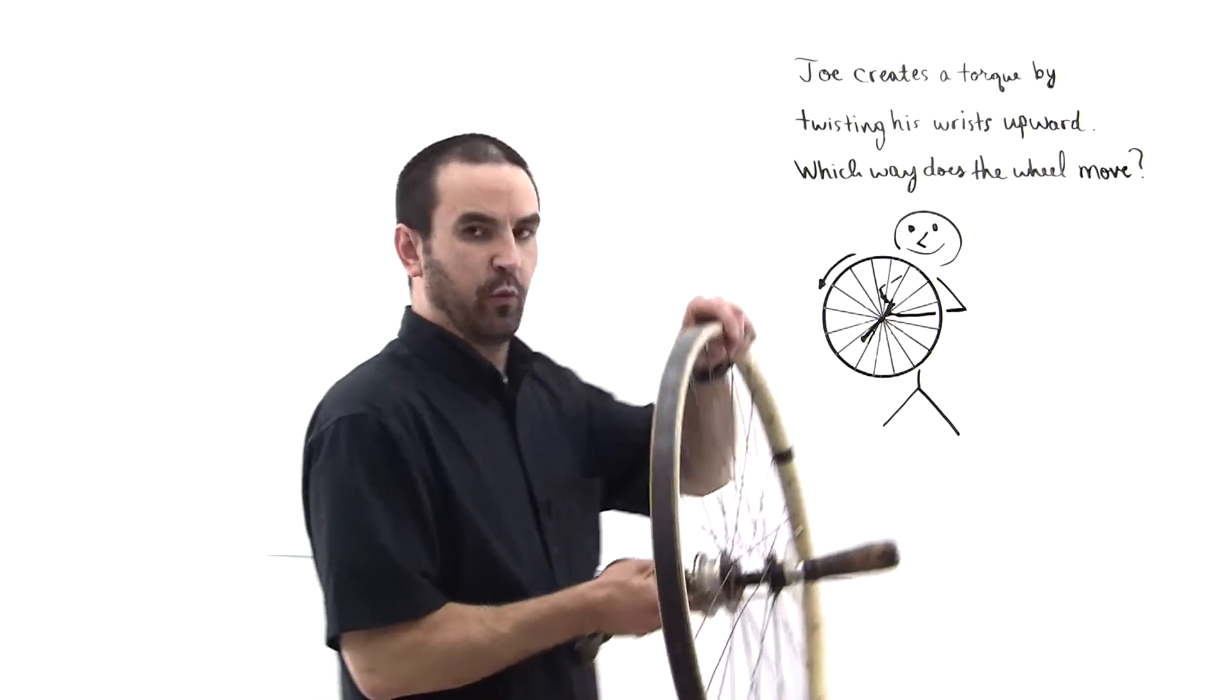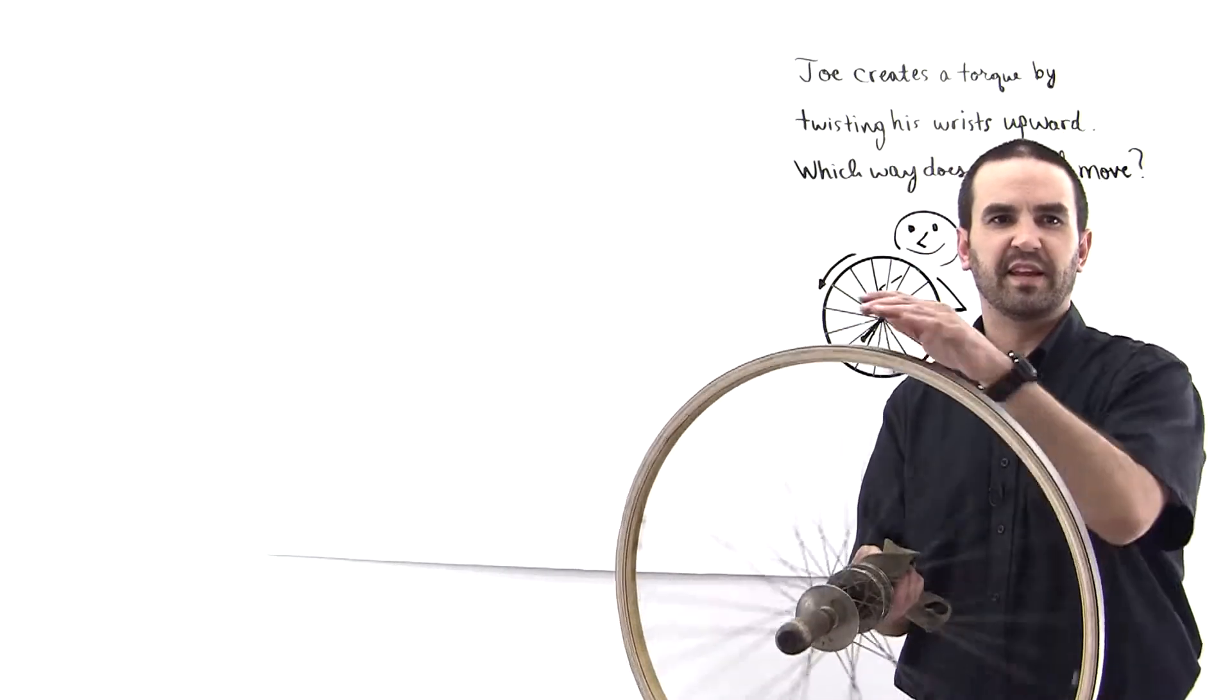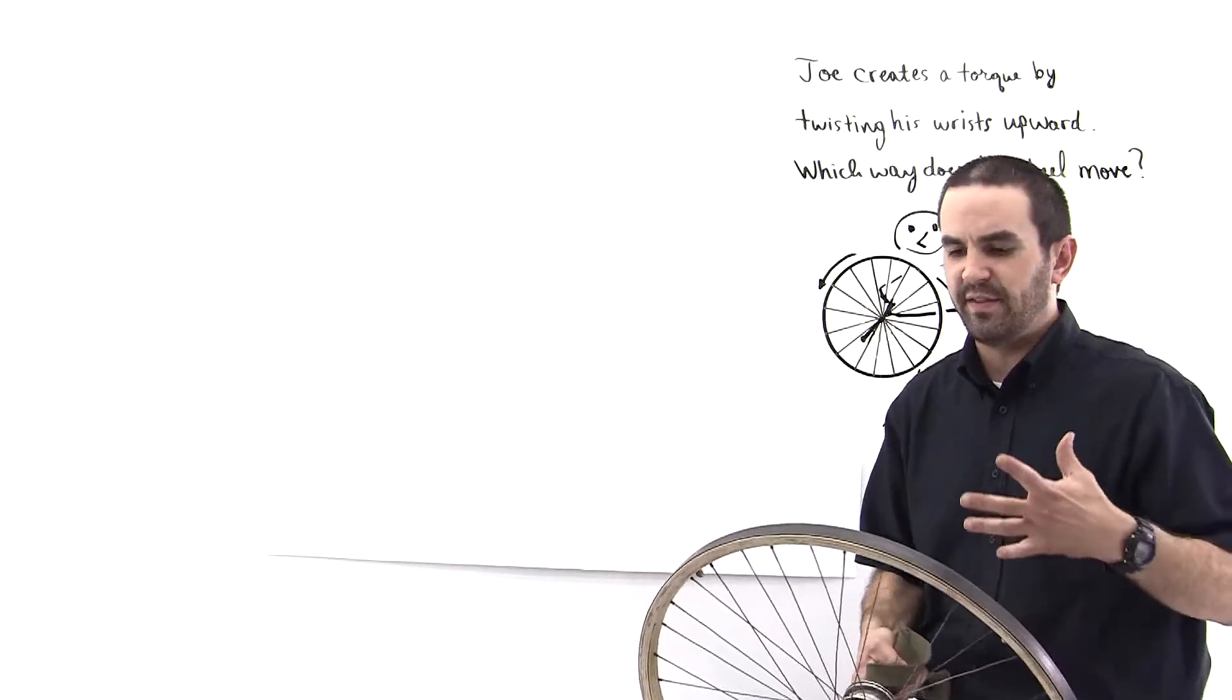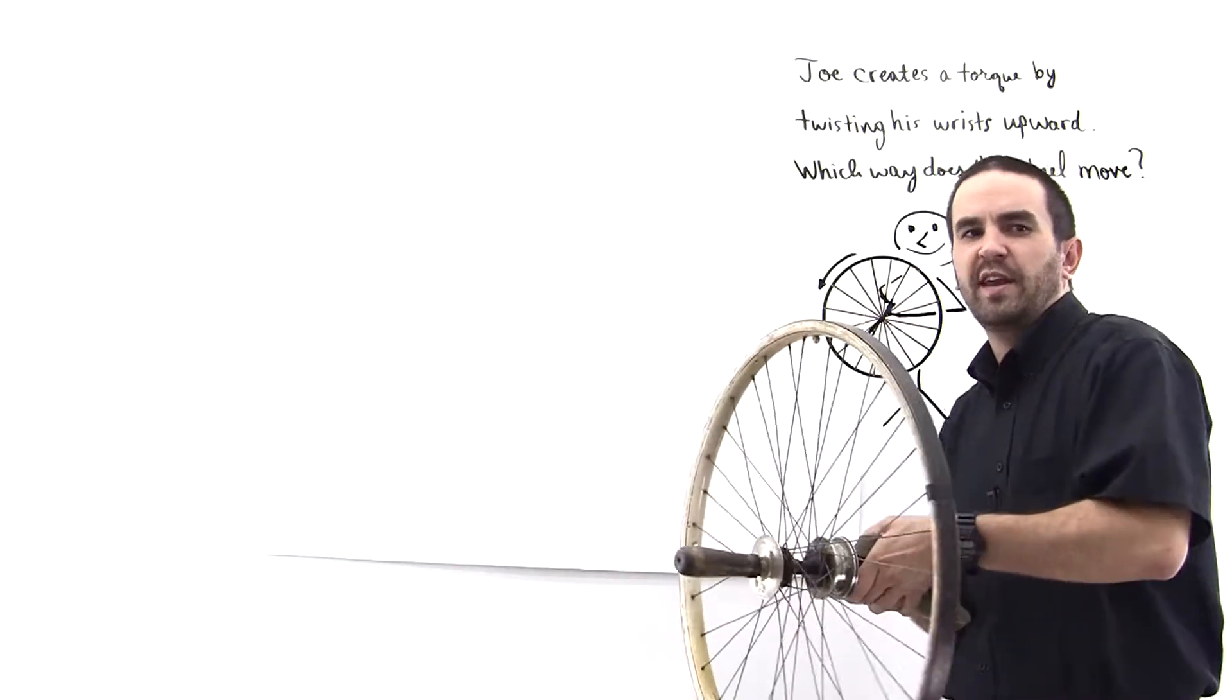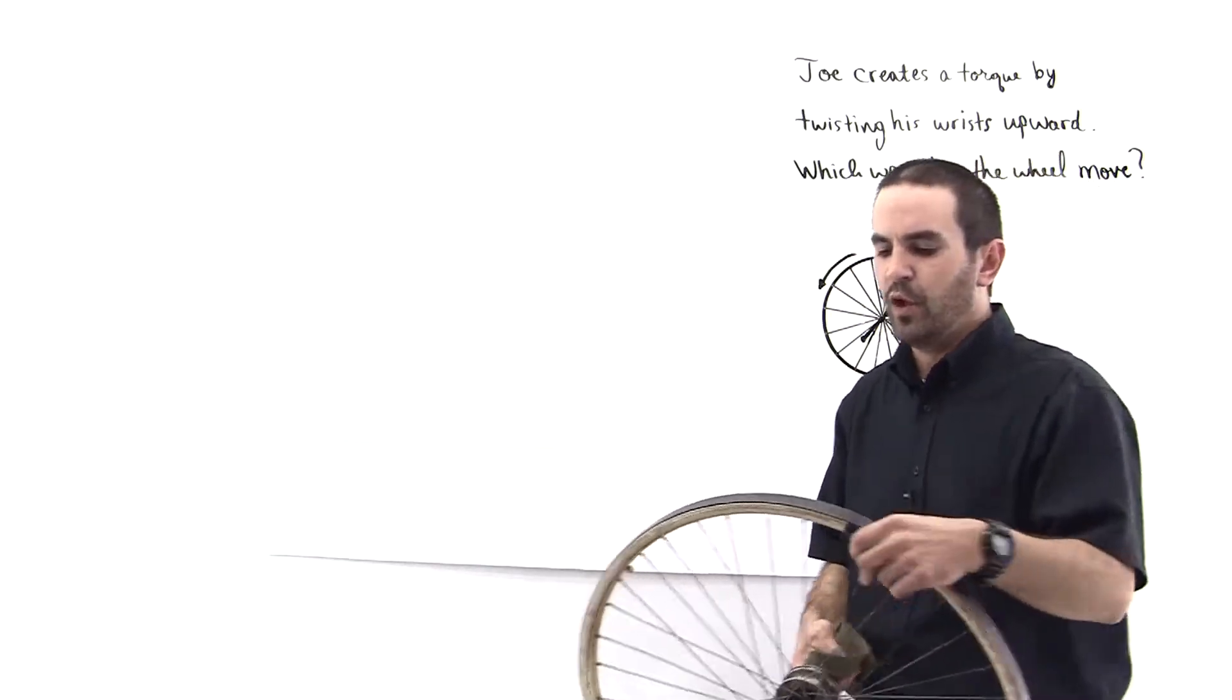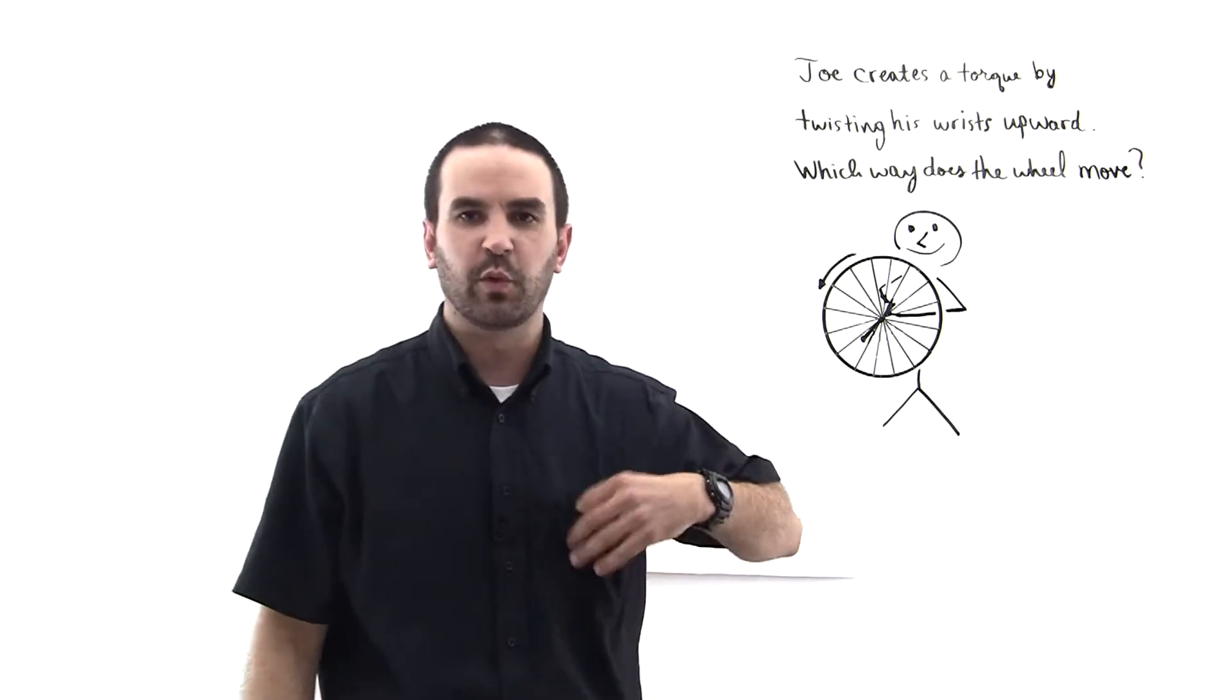So Joe has a wheel sort of like this one with dowels on either side and the wheel is spinning like this. Then he twists his wrist upward like this, creating a torque, and they want to know: does the wheel move to the right, left, straight up, or straight down? What is the direction of movement of the wheel? That's what we want to determine.